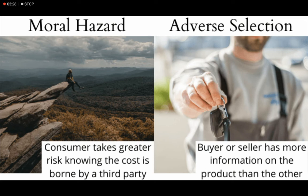So in both moral hazard and adverse selection, the cost for the seller of insurance increases — either because he does not have sufficient information (adverse selection), or because he cannot control the outcome after providing coverage (moral hazard). Both are related to insurance and similar businesses, and both are disadvantages for those who sell insurance. The main reason in both cases is information asymmetry — one person knows more than the other. I hope this clarified your concept. Please ask in the comments and don't forget to subscribe. Thank you.